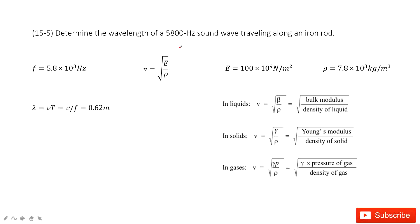Now in this one we need to find a wavelength for the sound waves. Its frequency is 5800 Hz and it travels in the iron rod. So now, the question is how can we find the wavelength?